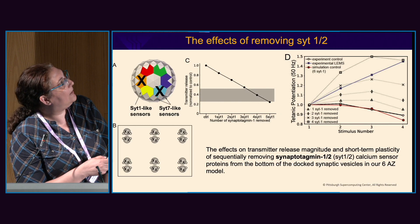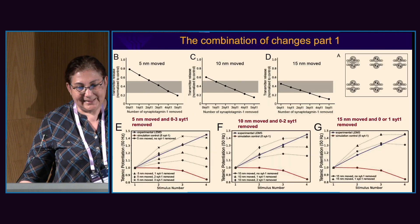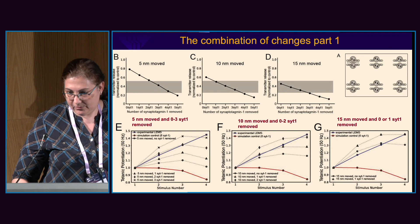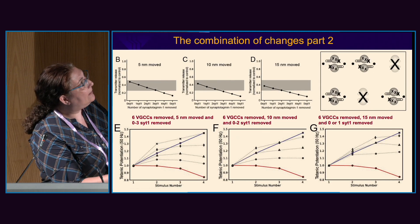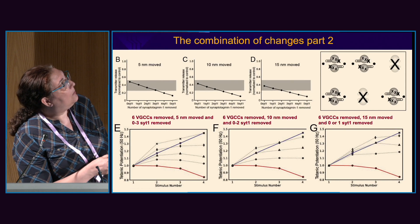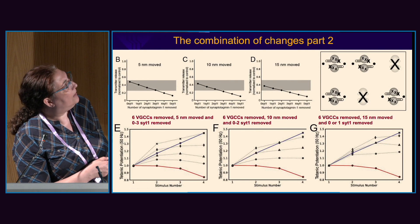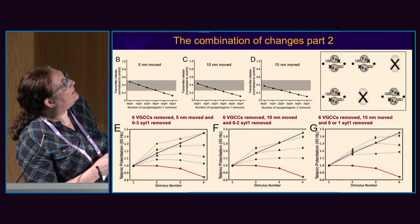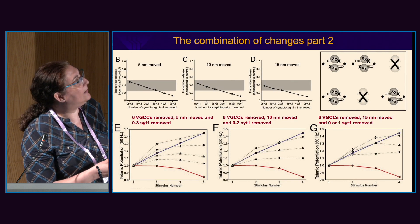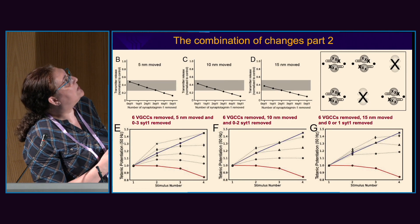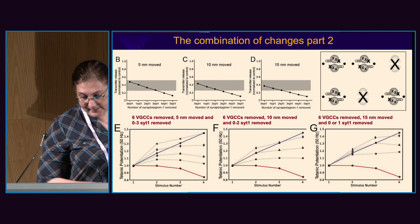We then started removing synaptotagmins — here we removed between one and five of them — and we see that this can recover the facilitation a little better. When we combine all of these effects — removing some active zones, removing some channels, displacing the remainder, adding L-type channels which appears in LEMS disease, and removing one to three synaptotagmins — we could recover the full facilitation. Several different scenarios, with between one and three synaptotagmins removed, can recover the facilitation and also show good neurotransmitter release compared to experiments.